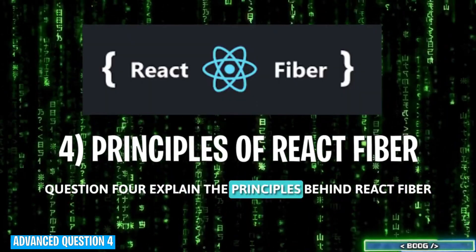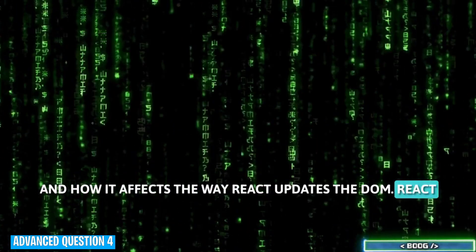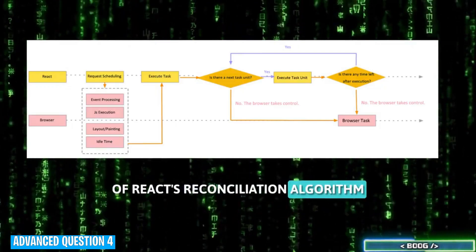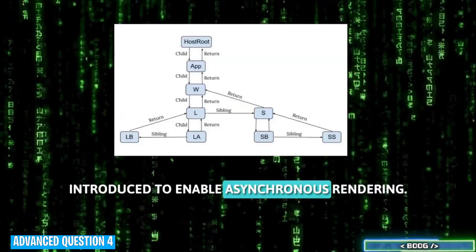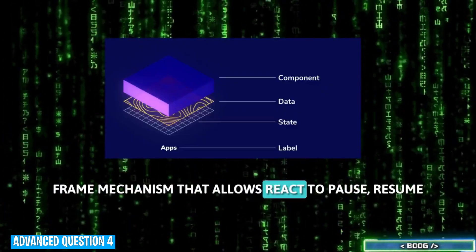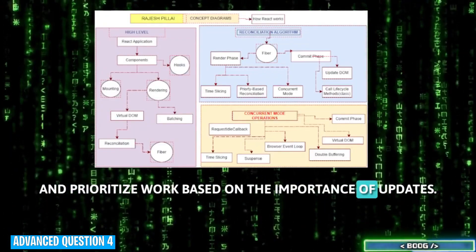Question 4. Explain the principles behind React Fiber and how it affects the way React updates the DOM. React Fiber is a complete reimplementation of React's reconciliation algorithm introduced to enable asynchronous rendering. At its core, Fiber is a virtual stack frame mechanism that allows React to pause, resume, and prioritize work based on the importance of updates.